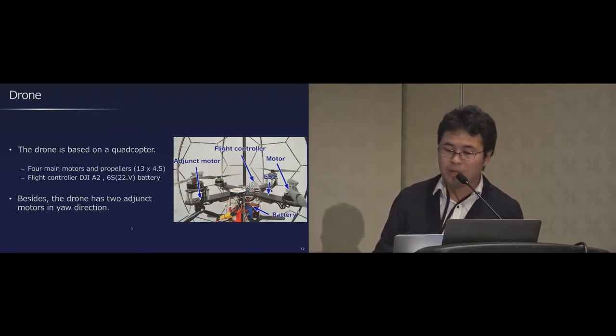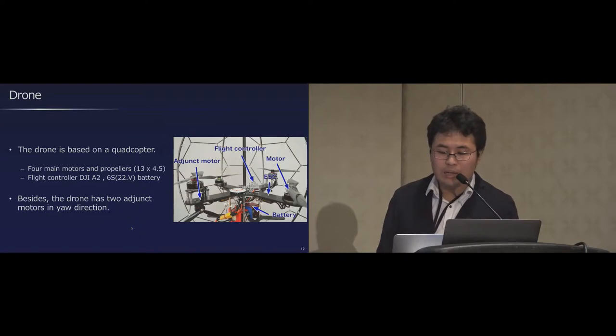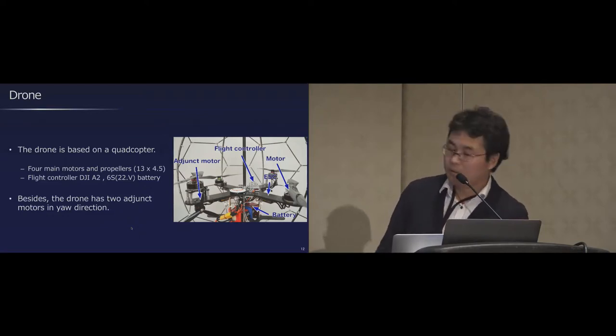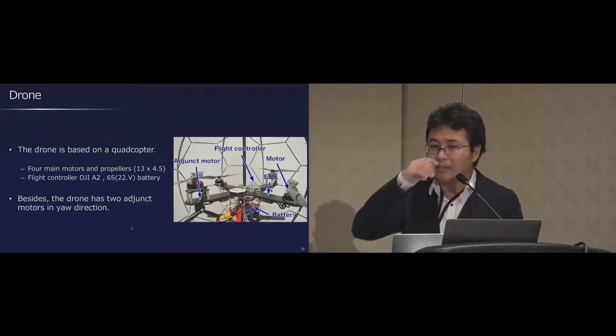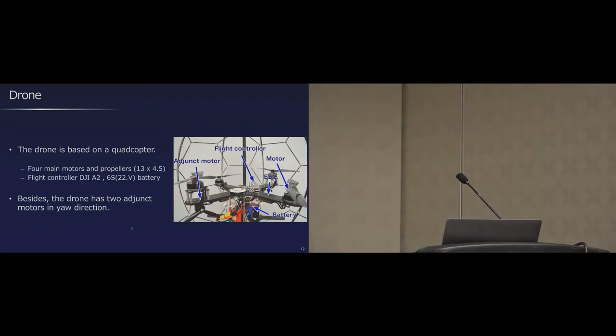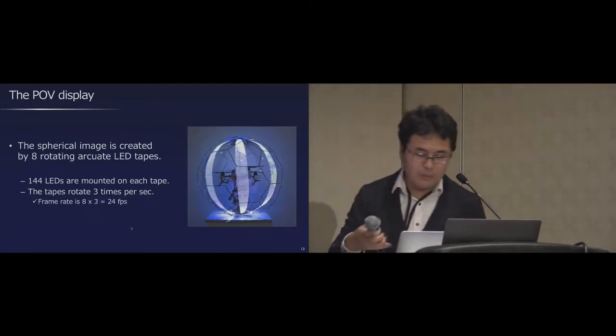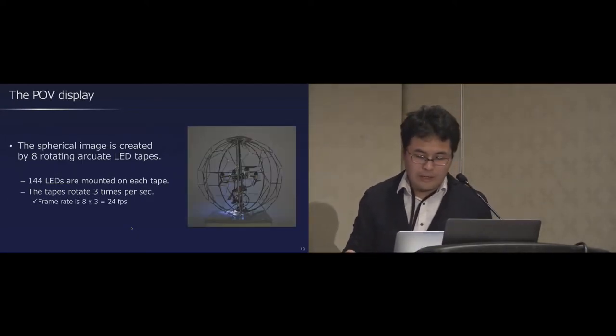The built-in drone is based on quadcopter, and the setup is shown as below. We made the drone's frame by cutting carbon plate using NC milling machine. Unlike a normal quadcopter, two adjacent motors in yaw axis are attached. Their roles will be explained later. This is the small model.